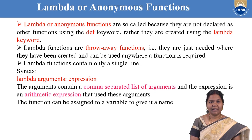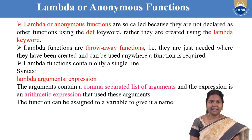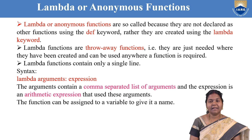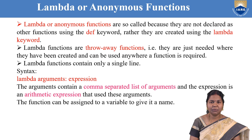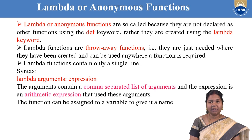What is a lambda or anonymous function? These functions are called anonymous functions because they are not created or declared using the def keyword in Python, but they are created using the lambda keyword. Lambda functions are known as throwaway functions because they are just needed whenever they are created and can be used anywhere wherever a function is required.